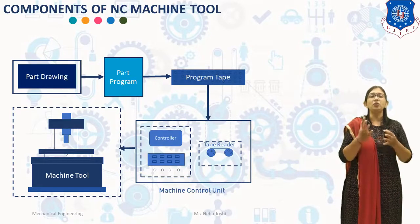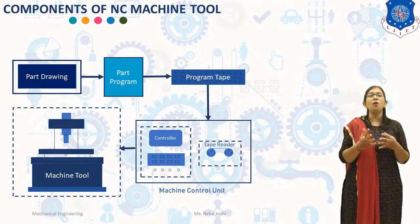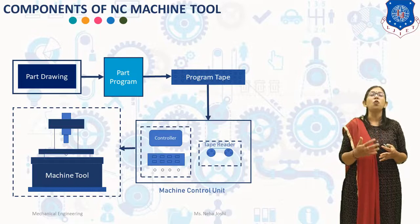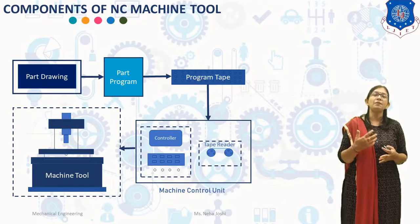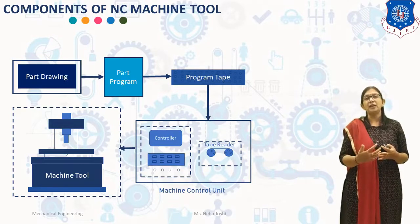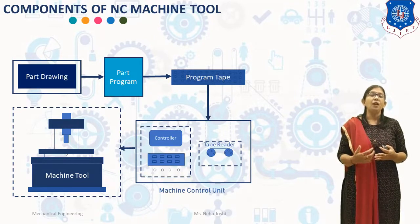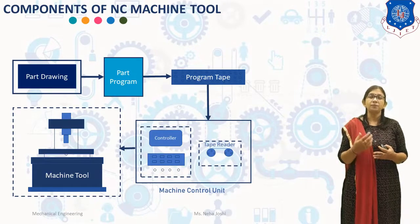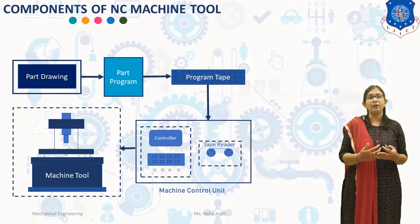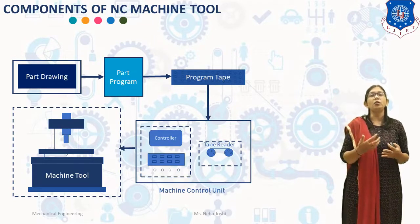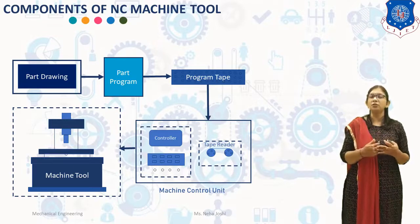The second component is program tape. The part program is entered on the program tape. The tape is a long round roll of one inch width. The program is entered on the tape in the form of punch holes. The holes are punched with the help of punching machines. Different types of program tape are: punched paper tape, punched plastic tape, magnetic cassettes, clock piece, CD, and keyboard.